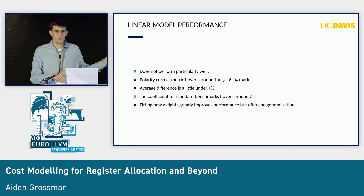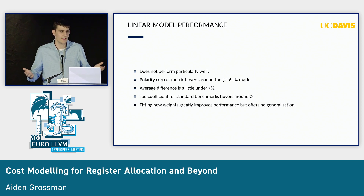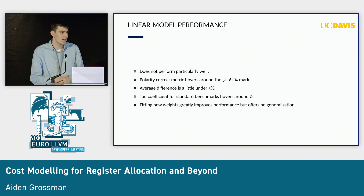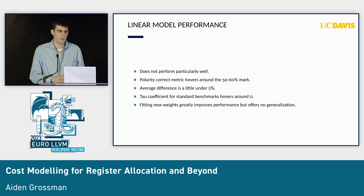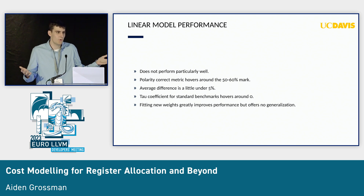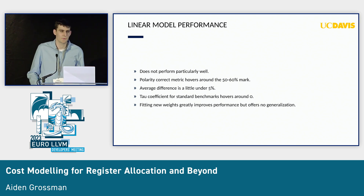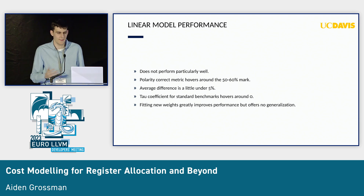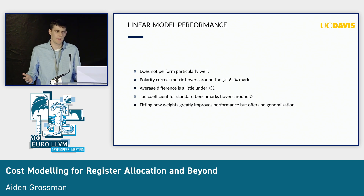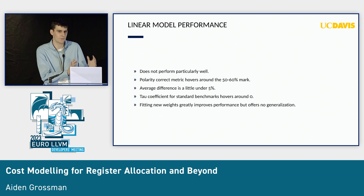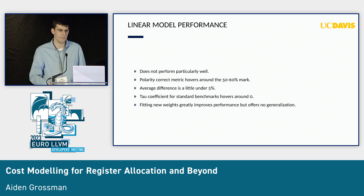These metrics do improve if we're using more ideal execution conditions. If you take a benchmark with very few L1 data cache misses, the polarity correct goes up to around 70%, and the tau coefficient goes up to around 0.5. Also, since it's a linear model, we could do a linear regression to try to get better performance there, but it significantly improves performance only on an individual sample with no generalizability — on the same benchmark with a different sample, it'll perform about the same as before.